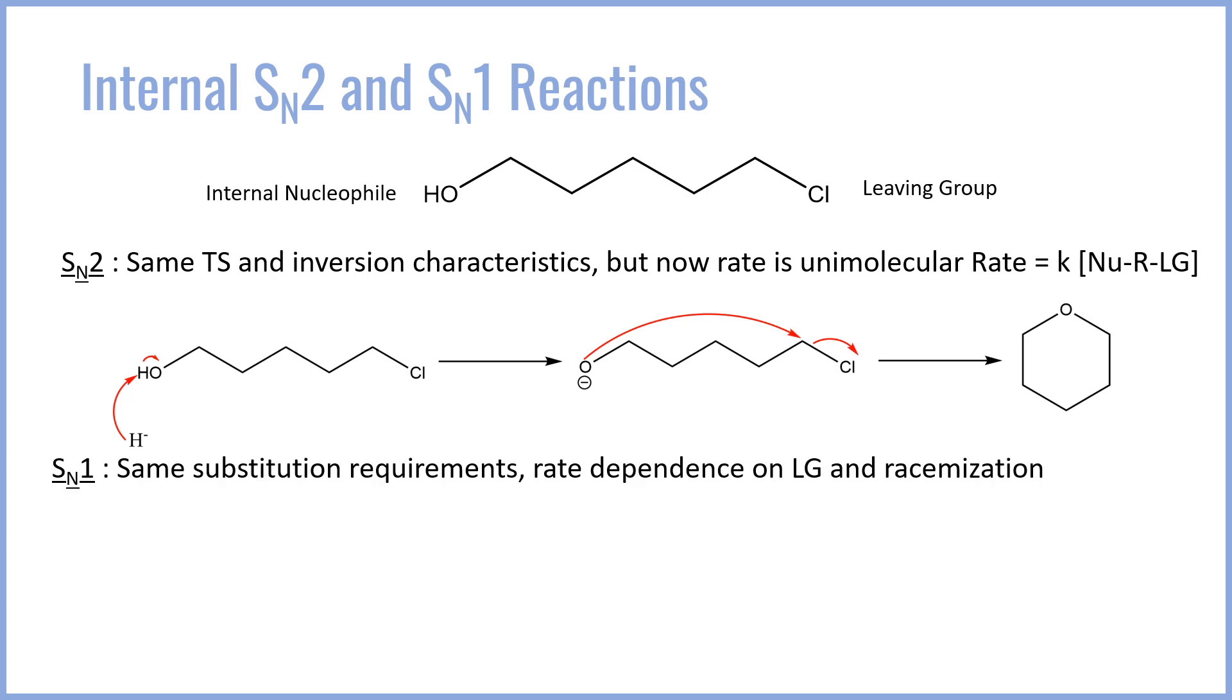A similar thing can happen through an SN1 process. It has the same substitution requirements as normal SN1 so secondary and tertiary species are okay, primary is not, and the rate dependence on the leaving group is the same and the racemization of the stereocenter is also the same. So in this case you have the chlorine now on a secondary carbon as opposed to a primary so SN1 is possible. The chlorine leaves forming the carbocation and then our weak OH nucleophile can go ahead and attack the cation. This forms a protonated OH intermediate which is then deprotonated by the resulting chloride to give the final product. Note again we have a heterocyclic ring closure where the oxygen is in the ring. In this case we have an extra methyl group because that was needed to give a sufficiently stable cation.